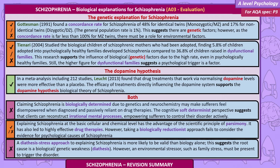In a meta-analysis including 2012 studies, Lachette found that drug treatments that work via normalising dopamine levels were more effective than a placebo. The efficacy of treatments directly influencing the dopamine system supports the dopamine hypothesis as a biological theory of schizophrenia.